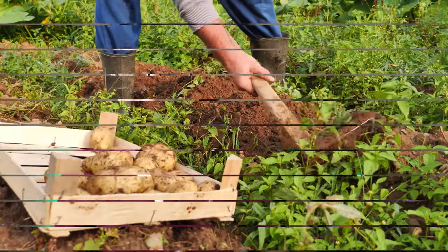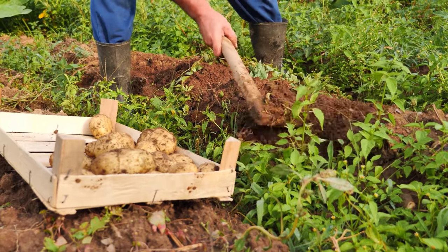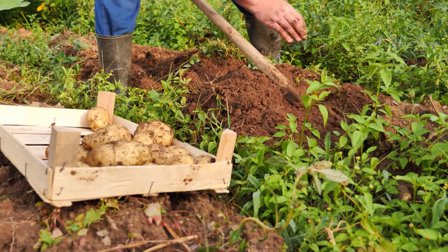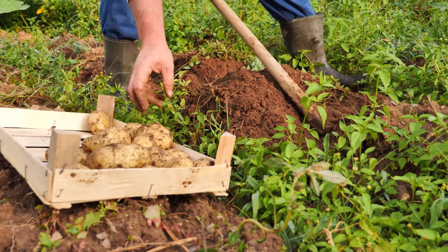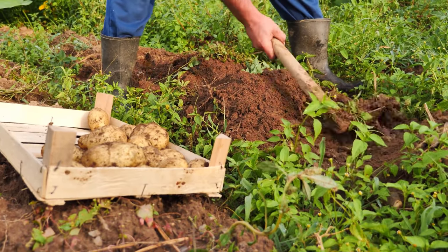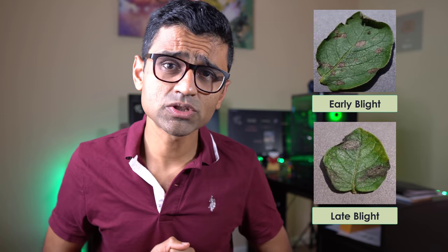Farmers who grow potatoes are facing a lot of economic losses every year because of various diseases that can happen to a potato plant. There are two common diseases known as early blight and late blight. Early blight is caused by a fungus and late blight is caused by a specific microorganism.